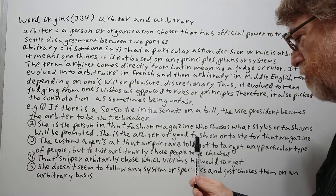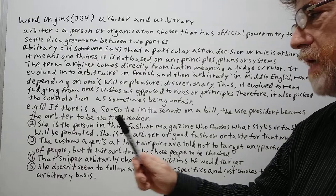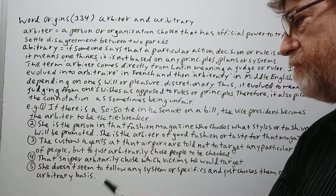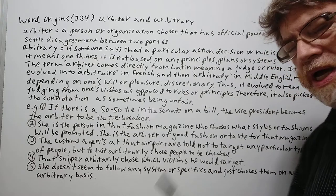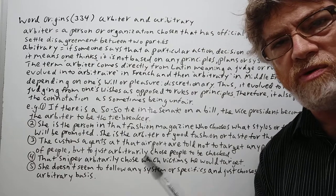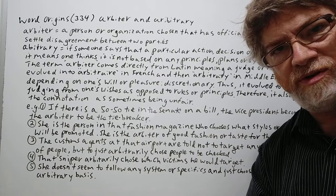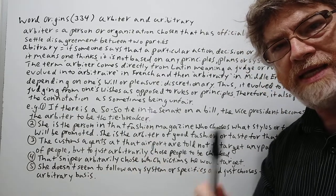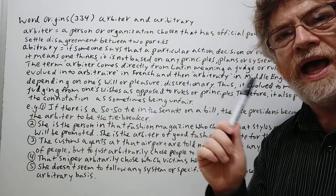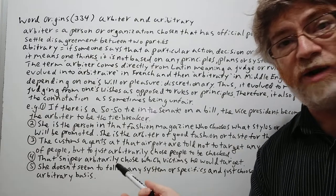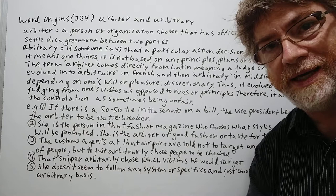Number three: The customs agents at that airport are told not to target any particular type of people, but to just arbitrarily choose people to be checked. Sometimes they're worried they'll be accused of racial profiling, so they don't say they're specifically looking for any particular race or type of person. This way they can say they choose people kind of randomly — or arbitrarily — in that sense.